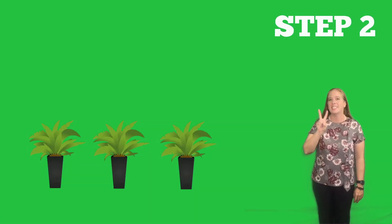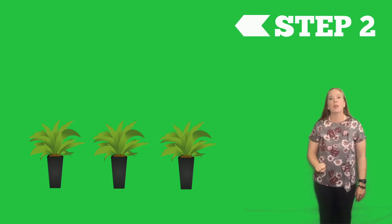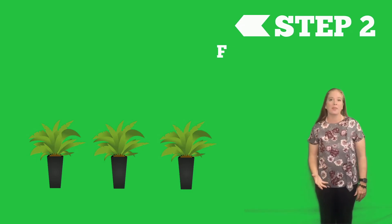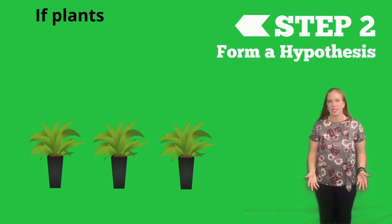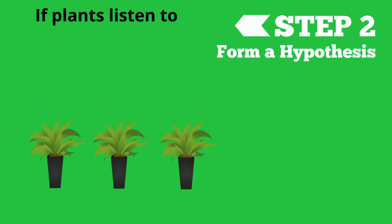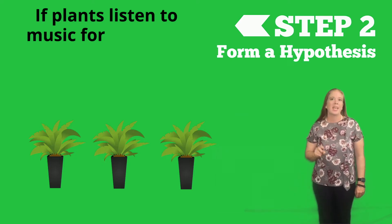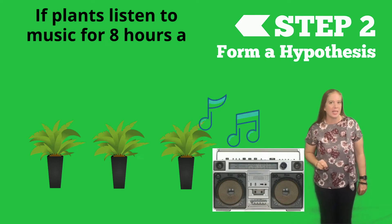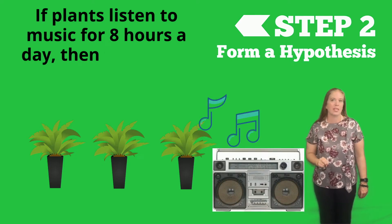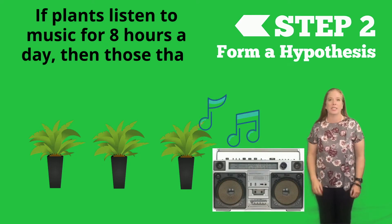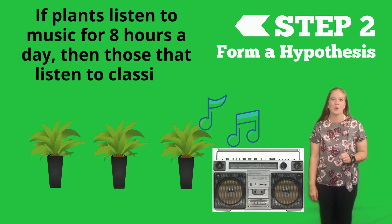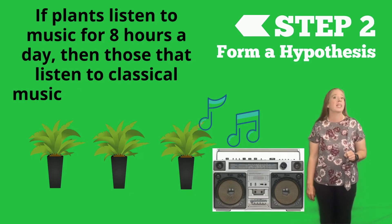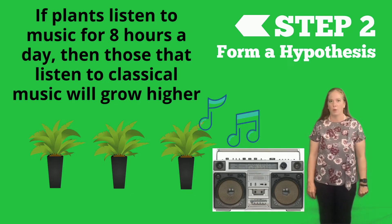In step two, you want to form a hypothesis, which is an educated guess of what you think is going to happen. For example: if plants listen to music for eight hours a day, then those listening to classical music will grow higher.